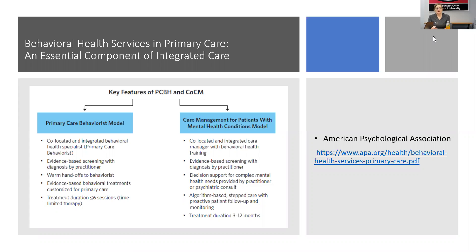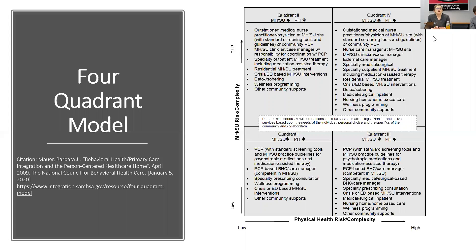Now let's focus on the four quadrant model, which is one of the older ones — it's actually been around for a fairly long time. It was originally used to look at mental health versus substance use treatment and how to better integrate those. My first variation in integrated care was integrating mental health and substance use disorder treatment, and then at some point the field realized we also need to integrate with primary care. The model uses quadrants to identify what services and structure might look like. The bottom left is low mental health and low physical health needs; the top right is high mental health and high physical health needs.